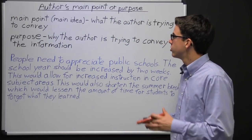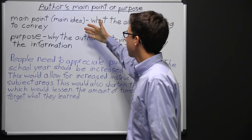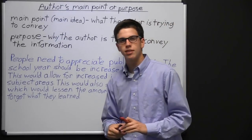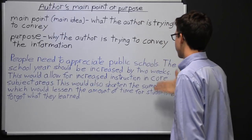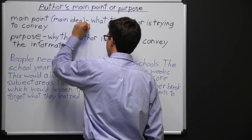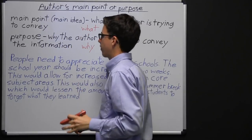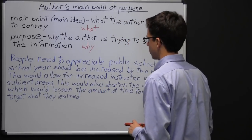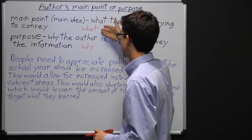When looking at a passage, you need to determine the author's main point and their purpose. Another term for main point would be main idea — this is what the author is trying to convey, the most important information the author is trying to convey to the reader. Then there's purpose — this is why the author is trying to convey the information. The main point is the 'what' and the purpose is the 'why,' because the purpose is what the author is hoping to achieve by sharing the information with you.